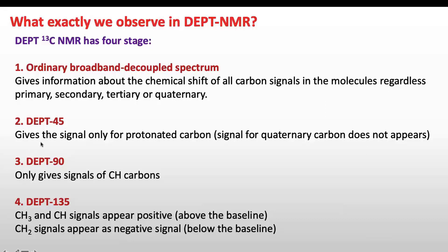DEPT 45 gives signals only for protonated carbons, meaning the signal for quaternary carbon will be missing. DEPT 90 gives signals only for CH carbons — carbons having only one proton attached will give a signal in DEPT 90. Signals for CH₃, CH₂, or quaternary carbon will be missing in DEPT 90.